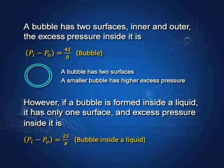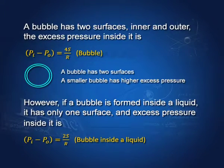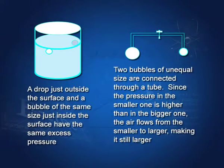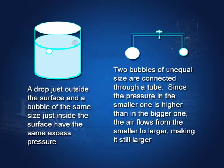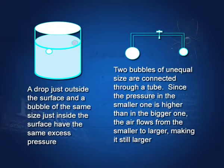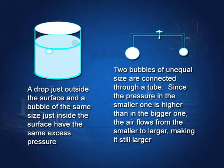The pressure inside a drop is in excess by 2S/r, where r is the radius of the drop. A bubble in air has two surfaces — one outer, one inner — and therefore the excess pressure inside a bubble in air is 4S/r. However, a bubble inside a liquid has only one surface, so its excess pressure is 2S/r, the same as a drop of the same size. If you have two bubbles, one smaller and one larger, connected by a nozzle, the smaller bubble has higher pressure — inversely proportional to radius — so air flows into the larger bubble, which grows while the smaller one shrinks.